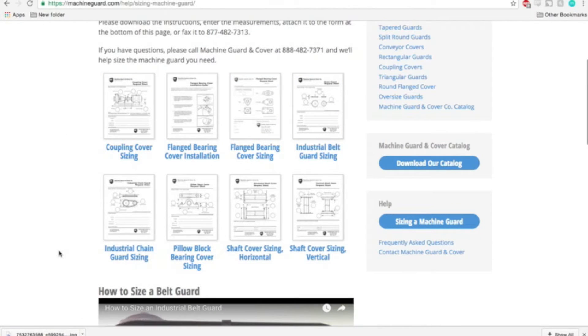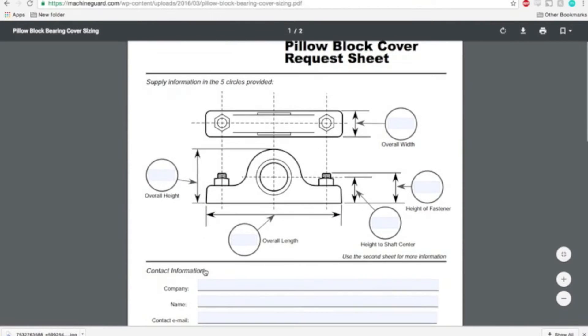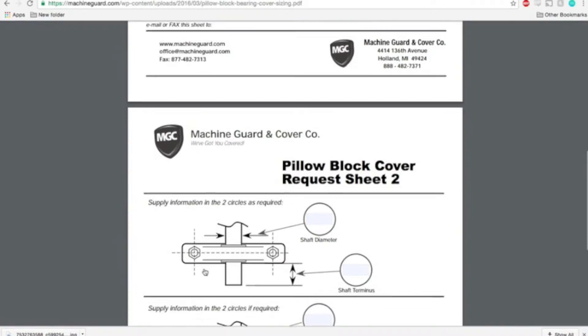This will bring you to a page of MachineGuard sizing worksheets. Select the link for the file labeled Pillow Block Bearing Cover Sizing. This PDF file can be filled out on your computer or printed off and filled in manually before you send it in to MachineGuard and Cover Company.